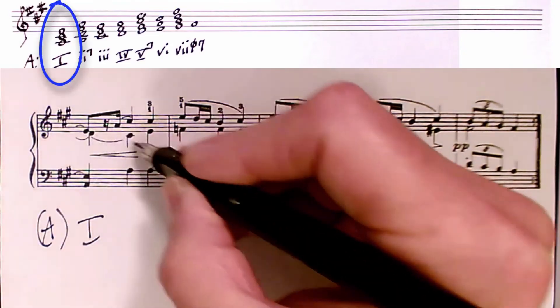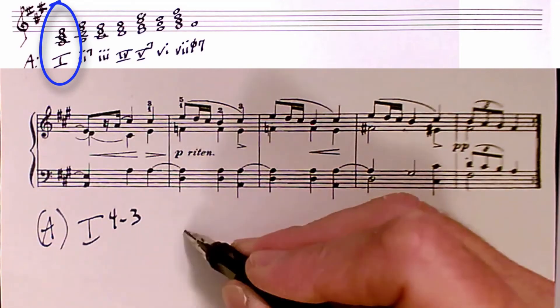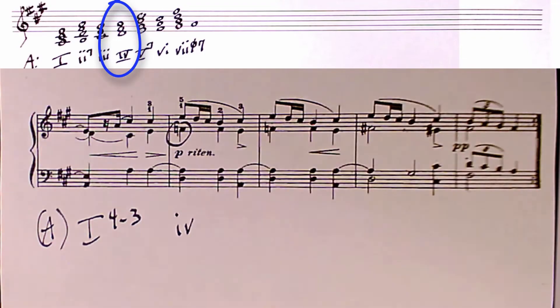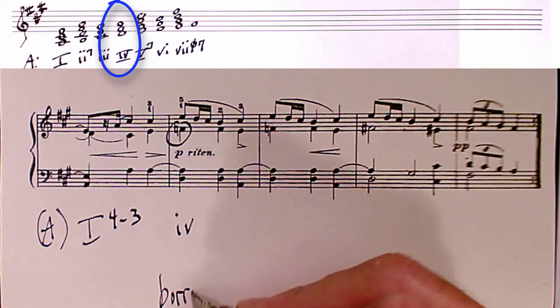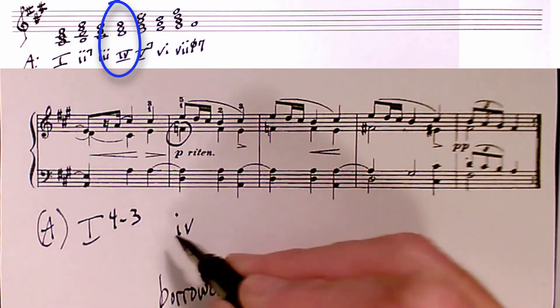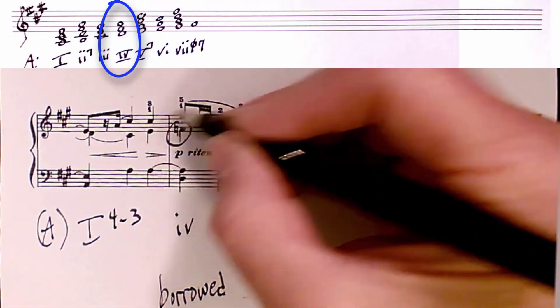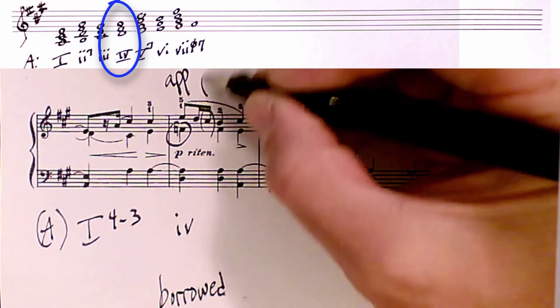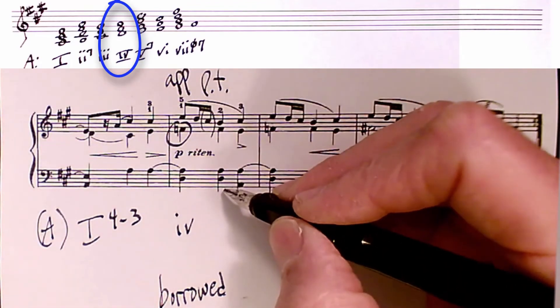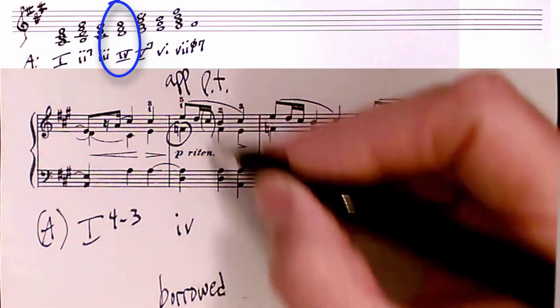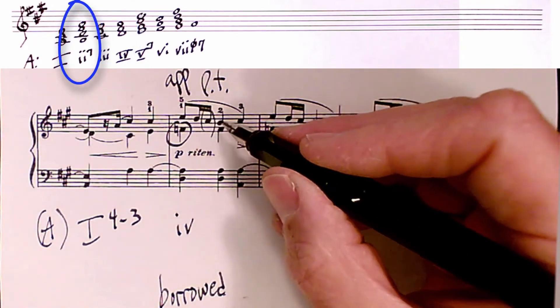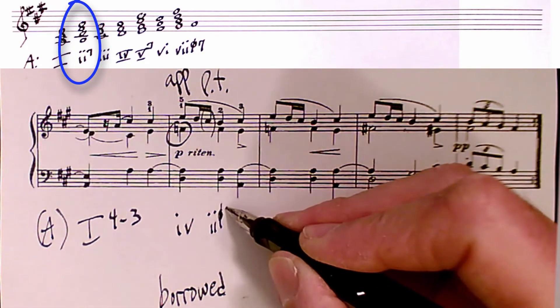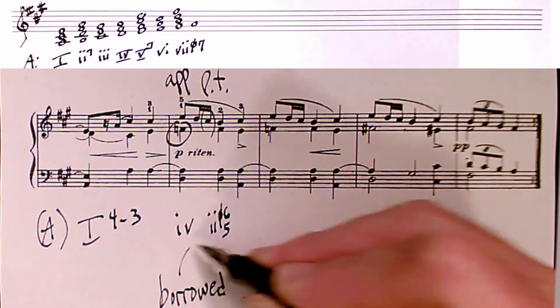The one chord with a four three suspension moves on to the four chord. But look at how the four chord actually has an F natural, which makes it a borrowed chord. In the key of A major, that should have been a major chord. This leaps up to a non-chord tone, so that's an appoggiatura on a strong beat. And we have a passing tone here. And this is another chord in the key of A, but another borrowed chord. This is more in the key of A minor, B, D, F, A. That's a two, half diminished, six, five. So these are both borrowed chords.